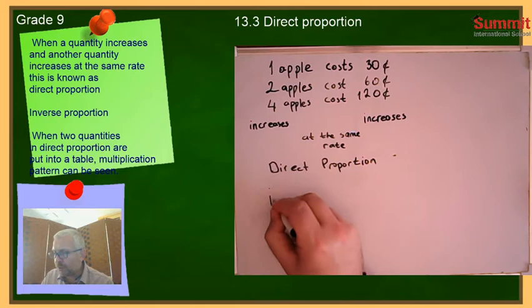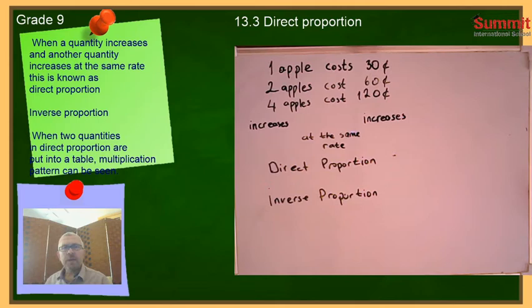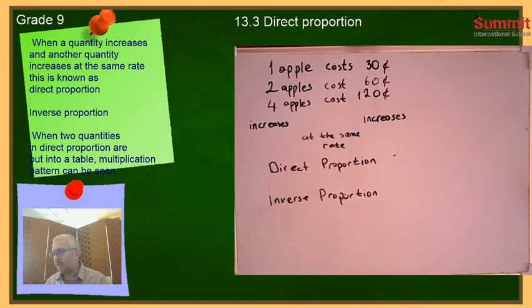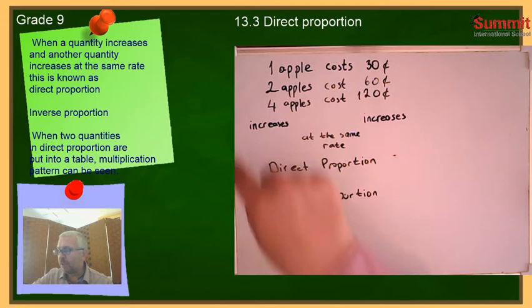Beside direct proportion, there is also inverse proportion. In inverse proportion, as the number of apples increases, the cost decreases. We are not going to study inverse proportion now — we will study it later. Now, when two quantities in direct proportion are put into a table, a multiplication pattern can be seen.